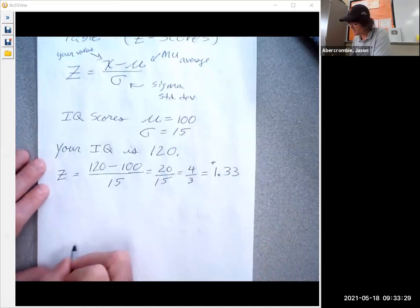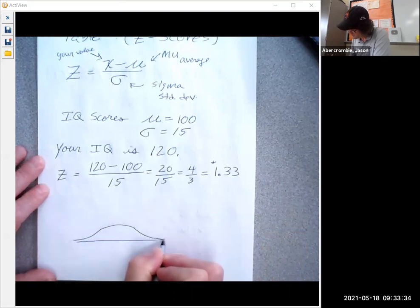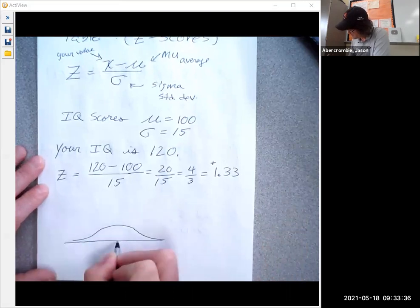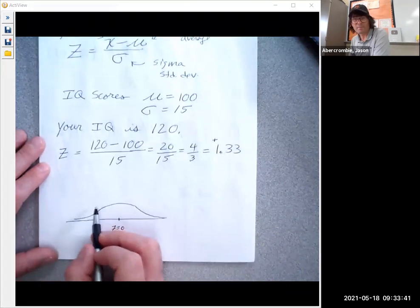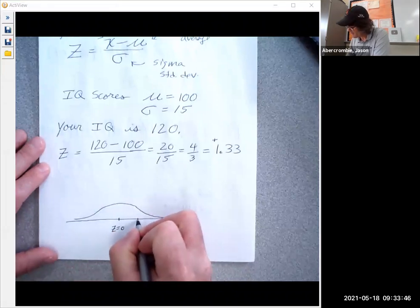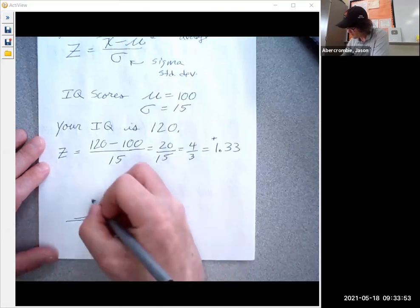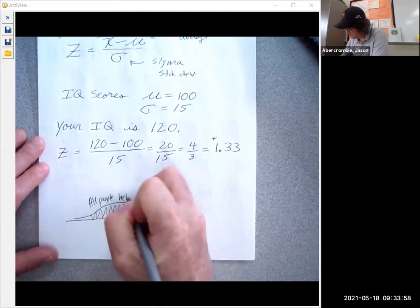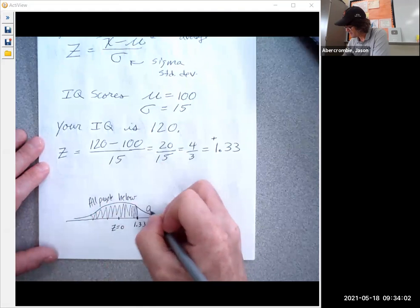So what we're going to do is we're going to draw a picture. This is called the bell curve or the standard normal curve. Here Z is zero—this whole area is considered to be one. Imagine that's one. So 1.33 is going to be maybe right here, and all this area left of you, these are all the people below your score, and this is above your score.